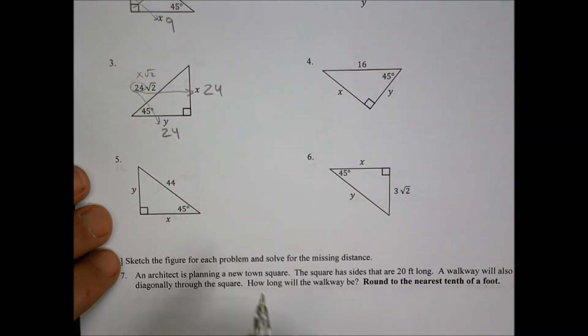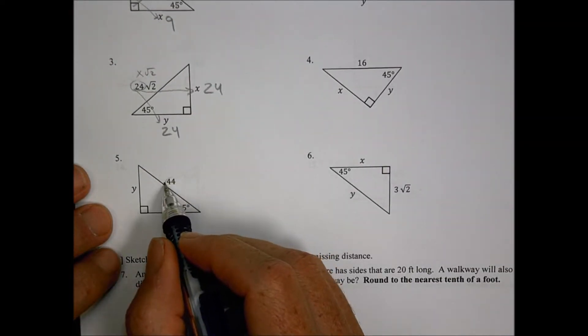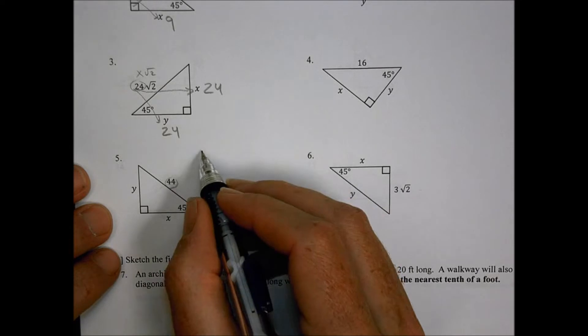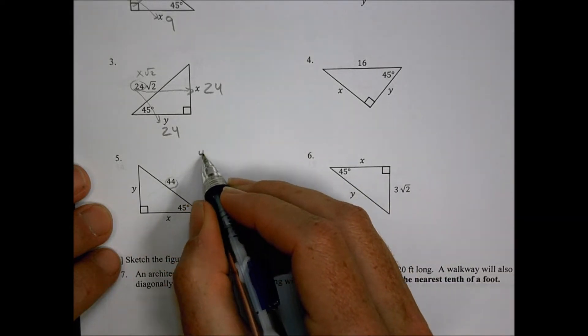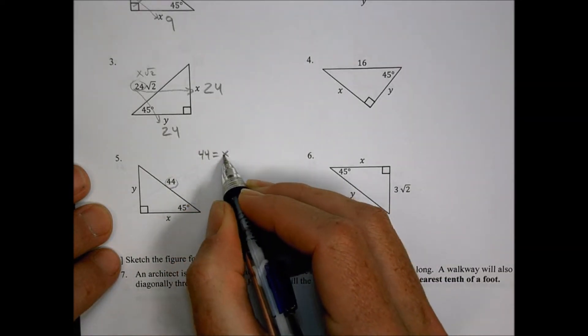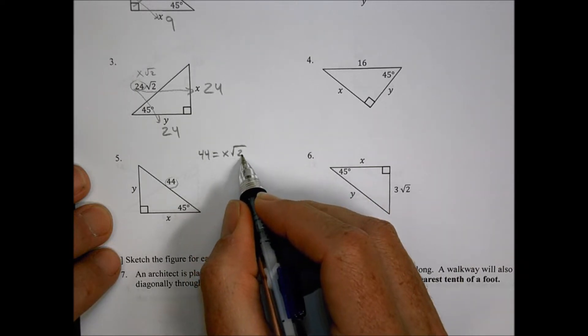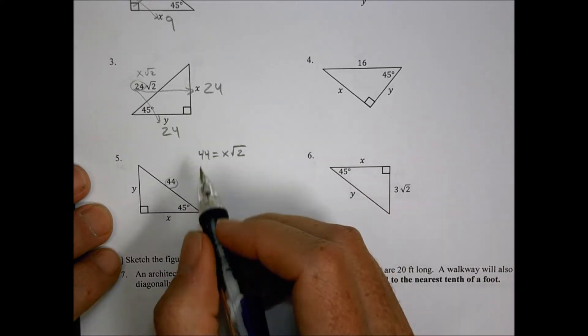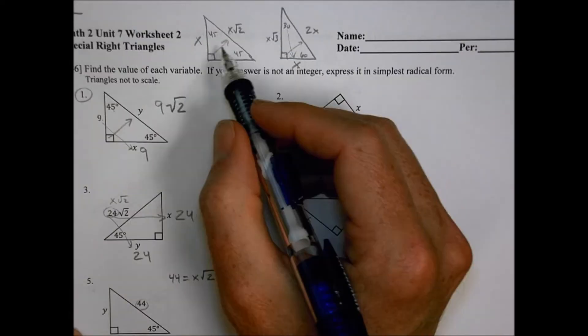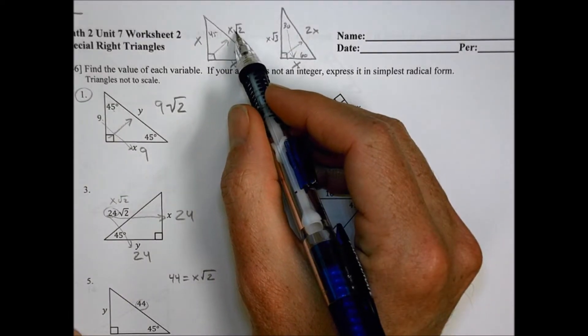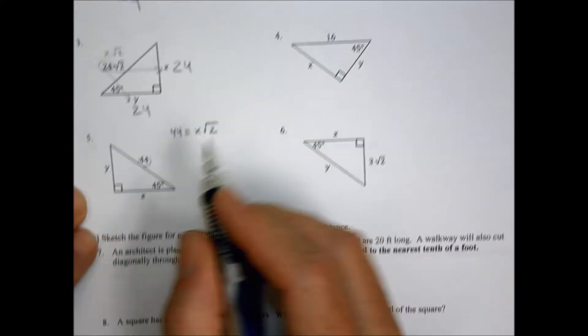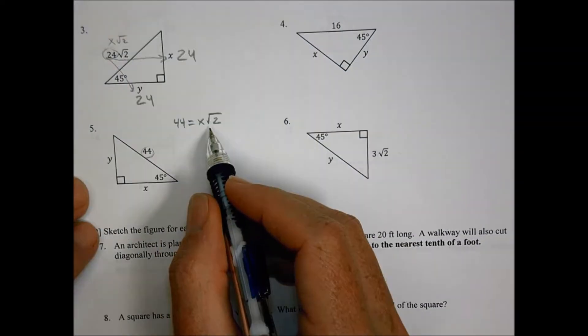Number 5 is a little bit different, right? Because they gave us this here as 44. Now a couple ways to think about it here. That 44 is the same as in our formula here, or our little setup for triangles, X root 2. Because that's what happens with the 45 of your triangle. The one across the hypotenuse diagonal from it is going to be X root 2.